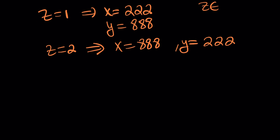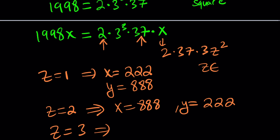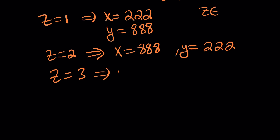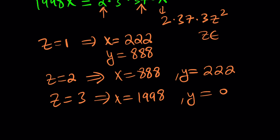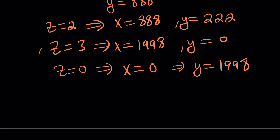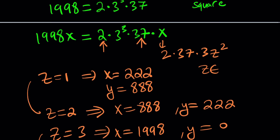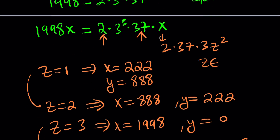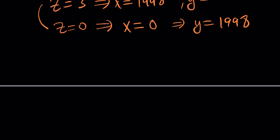What about z equals 3? If z is equal to 3, something interesting happens: x equals 1998 and y equals 0. And we didn't test z equals 0 — of course z equals 0 will work. That gives you x equals 0 and y equals 1998. Notice the symmetry: the solutions come in pairs. That's the end of the first method. Let's look at the second method.